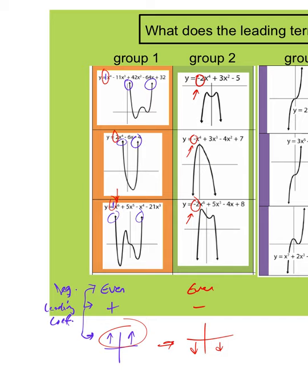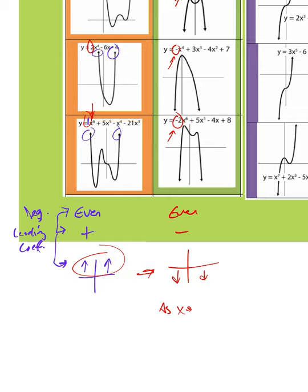Now it's going down at both ends. So we'd say: as x goes to negative infinity — as x goes to the left — y is going to go to negative infinity. And as x goes to positive infinity — going to the right — y is also going to go to negative infinity. That's what we're seeing here: as we keep going left, this is still going down; as we keep going right, this is still going down.